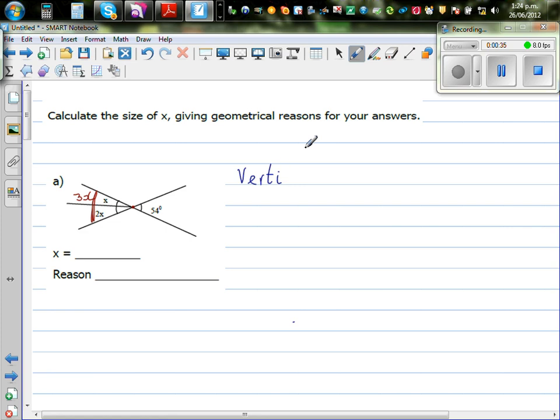Vertically, so let me write the reason here, so I don't have to repeat. Vertically opposite angles. Let me write this properly. Vertically opposite angles are equal. So this is a rule.